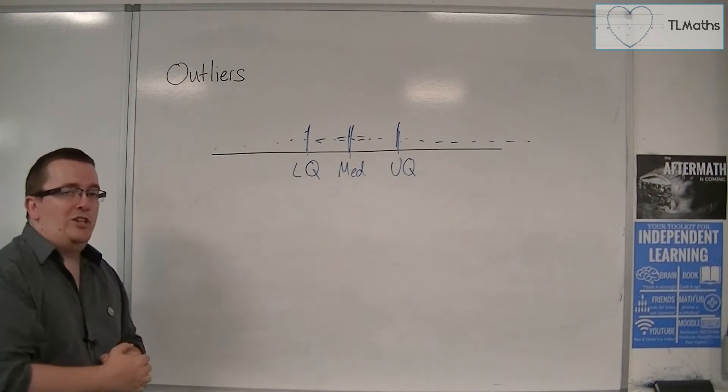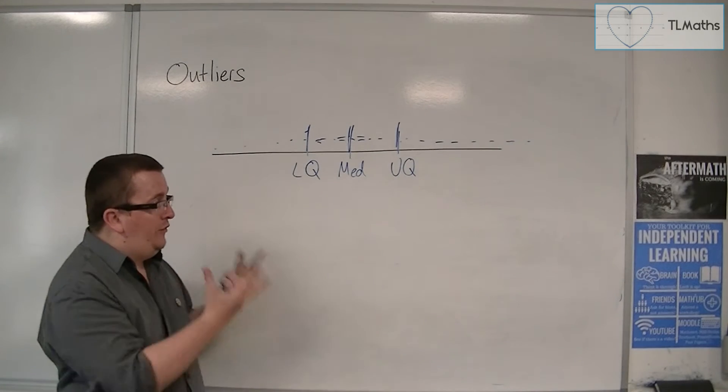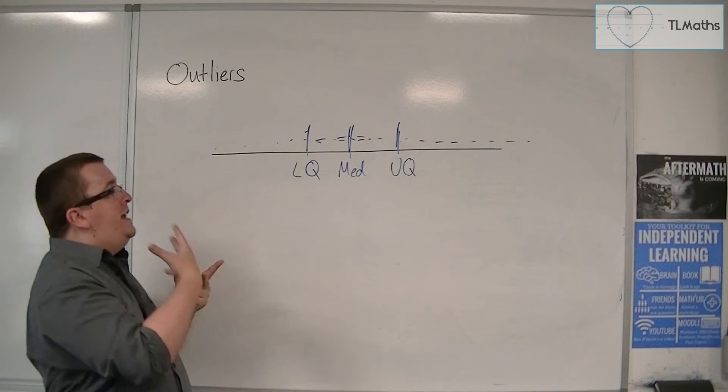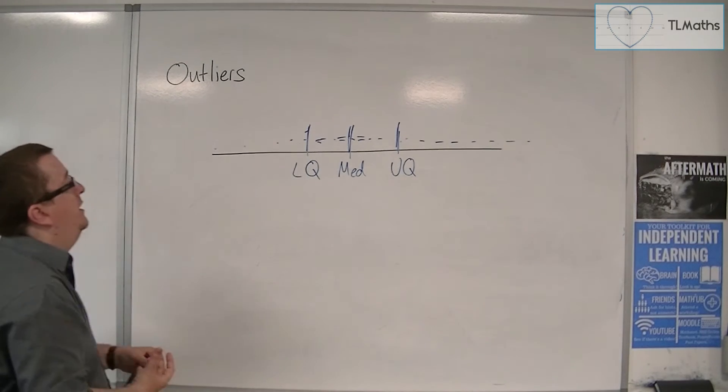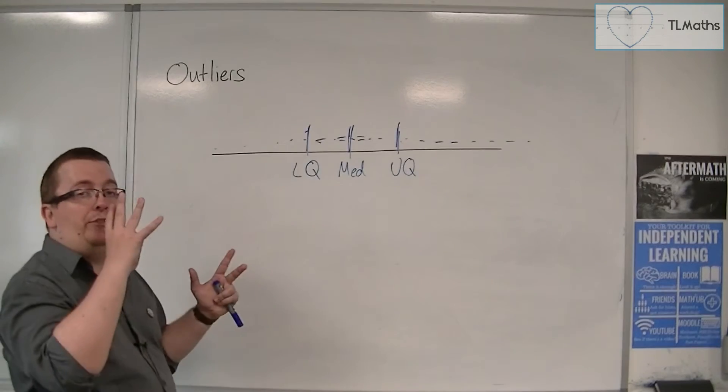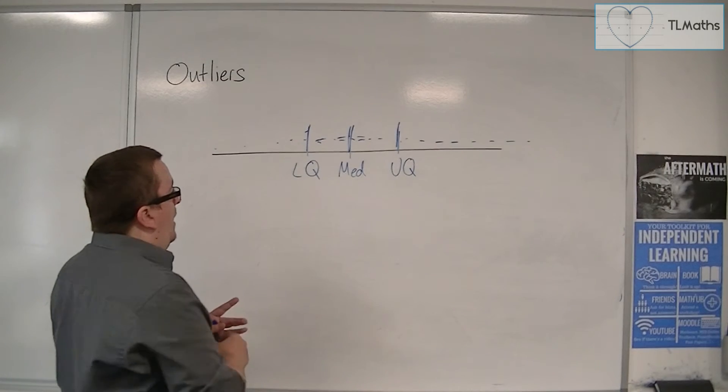So how do we actually work it out? What is a reasonable distance away from the lower quartile and upper quartile in order to count it as an outlier?